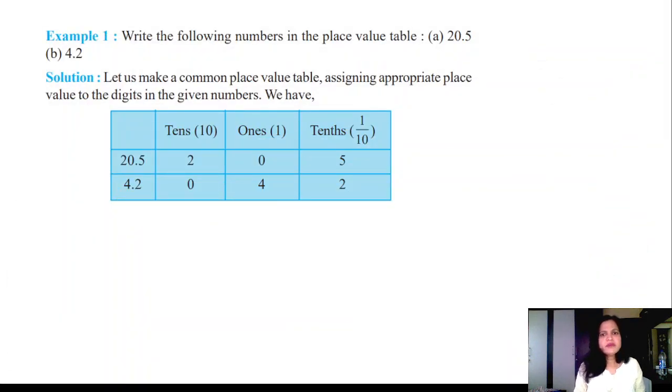Write the following numbers in the place value table. 20.5 already written here. We have to put the place value chart: tens, ones and tenths. So 2, 0, instead of putting point we write in the tenths place we write 5. 4.2: in ones place 4, point is not there in the place value chart, in the tenths place it is 2.